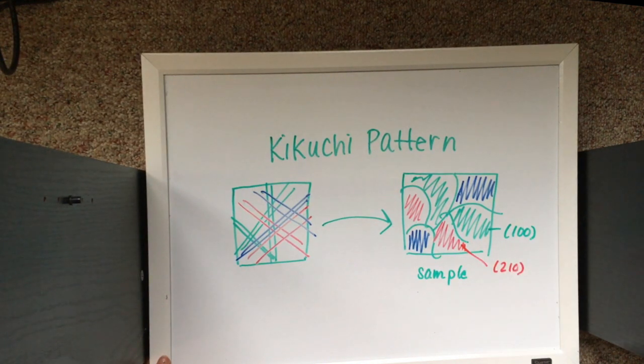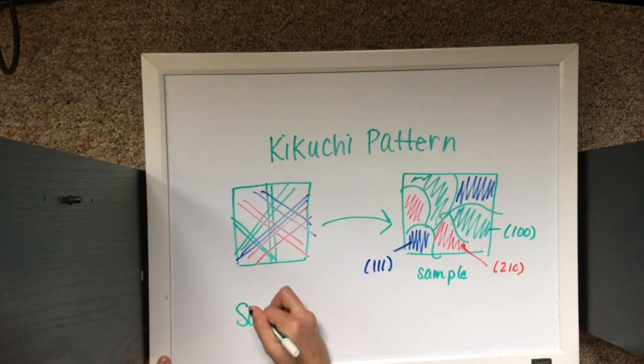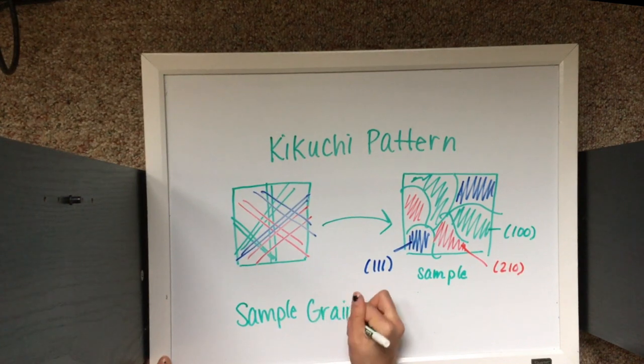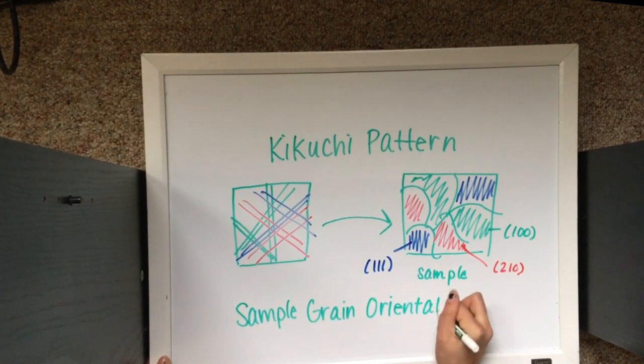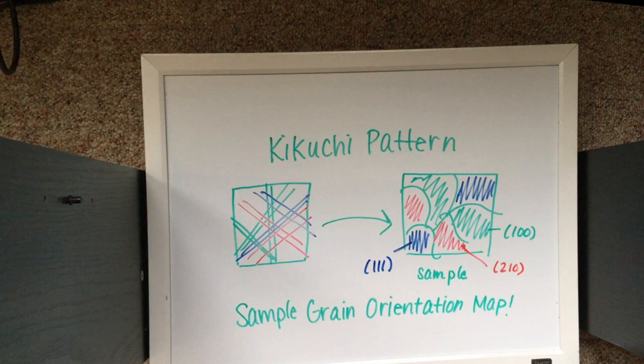You are left with an image that has an exact map of each grain within the sample, as well as the orientation of each grain. This can be used to determine average grain orientation of the entire sample and extrapolate mechanical properties from that.